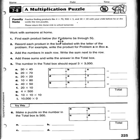Find each product below for problems 5A through 5I. Record each product in the box labeled with the letter of the problem. For example, write the product for A in box A.